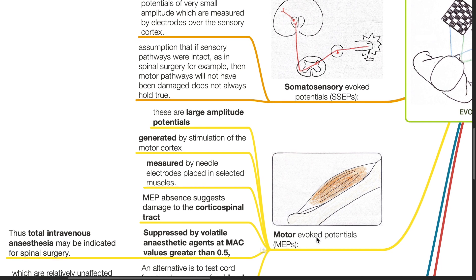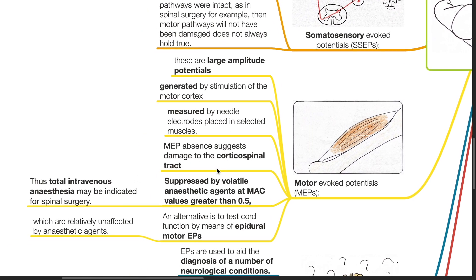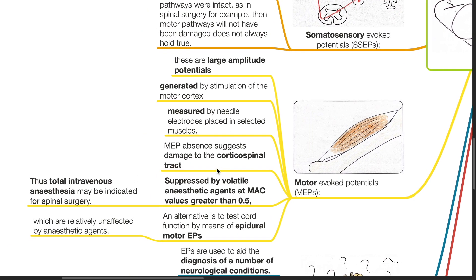Motor evoked potentials are large amplitude potentials generated by stimulation of the motor cortex and measured by needle electrodes placed in selected muscle groups. MEP absence suggests damage to the corticospinal tract. MEPs are suppressed by volatile anesthetics at MAC values greater than 0.5; thus, TIVA may be indicated for spinal surgery. An alternative is to test cord function by means of epidural motor EPs, which are relatively unaffected by anesthetic agents.